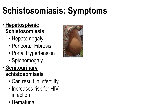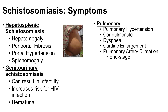Another system that can be affected is the pulmonary system. If the parasite burden is located within the pulmonary system, it can lead to increased pressure, resulting in pulmonary hypertension, cor pulmonale, dyspnea, and cardiac enlargement. It can also lead to pulmonary arterial dilatation, which is typically seen in the end stage.